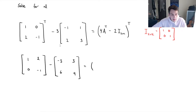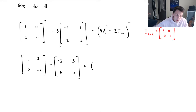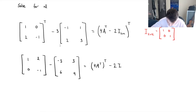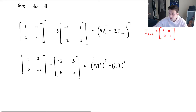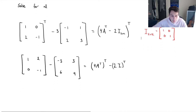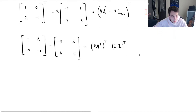Let's apply one of the properties of transpose. When we have the addition or subtraction of two matrices, we can apply the transpose to each of the matrices inside. So we've got 4A transpose transposed, as well as minus 2 times the identity matrix transposed. Notice that the transpose of the identity matrix is just the same, so we can remove that transpose on the second term.